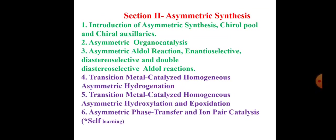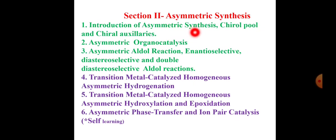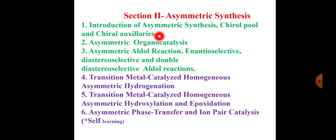Section 2nd, that is asymmetric synthesis, having 6 chapters. Number 1: Introduction of Asymmetric Synthesis, then Chiral Pool and Chiral Auxiliary. We discuss first the Definition of Asymmetric Synthesis, the Role of Asymmetric Synthesis, Basic Concepts of Asymmetric Synthesis, then Chiral Pool and Chiral Auxiliary — what is the role of Chiral Auxiliary, its definition, and its application.